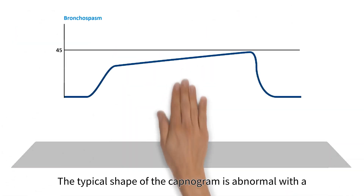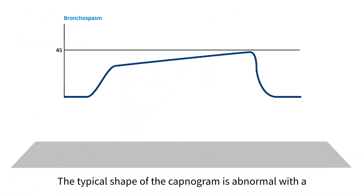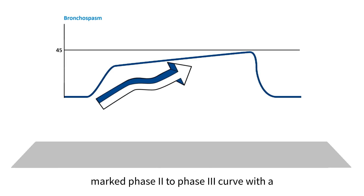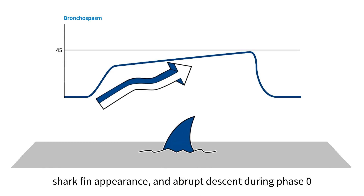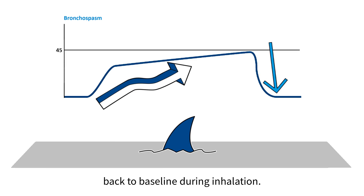The typical shape of the capnogram is abnormal, with a marked phase 2 to phase 3 curve with a sharp fin appearance, and an abrupt descent during phase 0 back to baseline during inhalation.